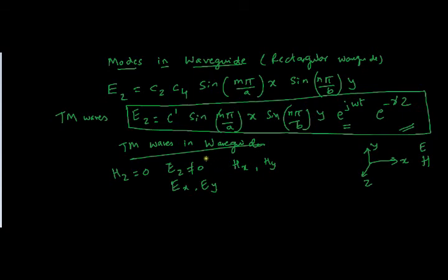For those who are interested in finding out how to derive the other field equations through Ez, you can go ahead — you need to use Maxwell equations for that. As you can see, m and n can take any integer values starting from 0, so they can take 0,0 or 0,1 or 1,0 and so on.